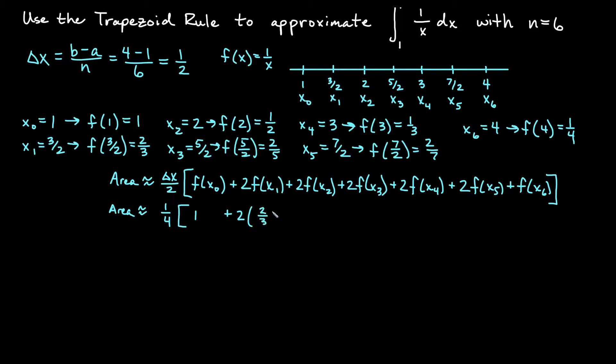And f of x₀ is 1 plus 2 times f of x₁, 2 thirds, plus 2 times the next value, which was 1 half, plus 2 times f of x₃, which was 2 fifths.